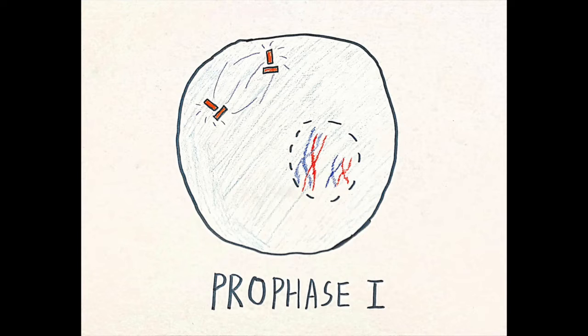Leptotene phase: This is the main phase of prophase I. Individual chromosomes separate and become single strands. Chromosomes line up as loops using cohesin.